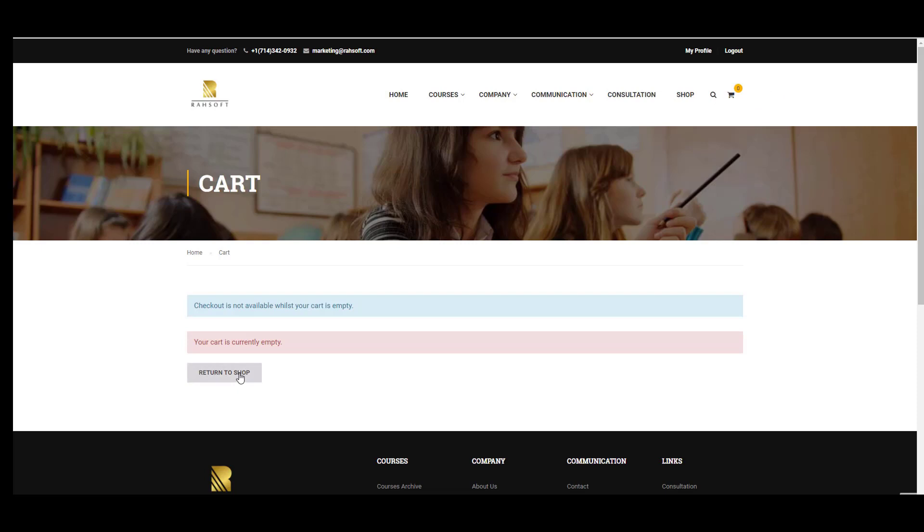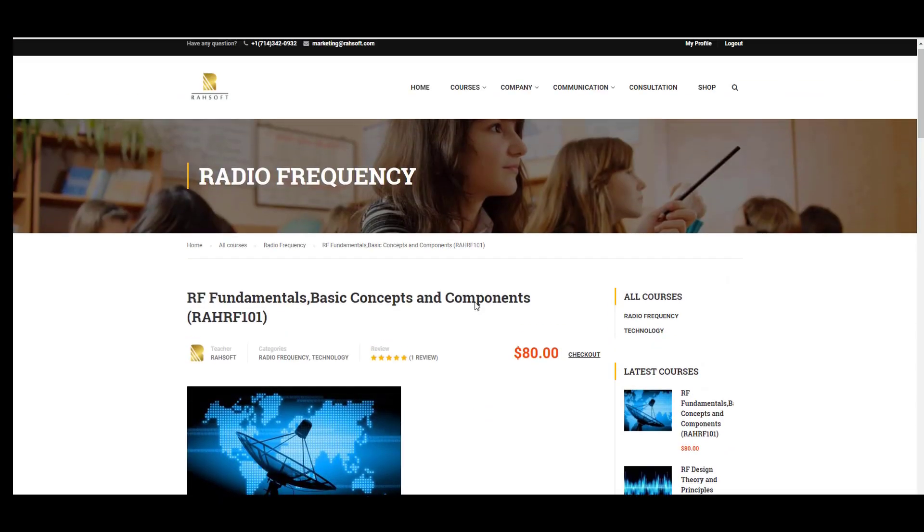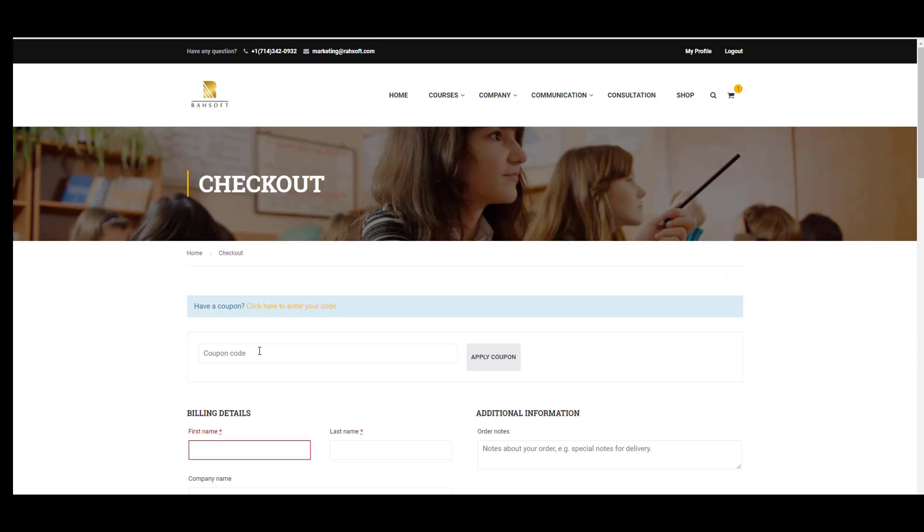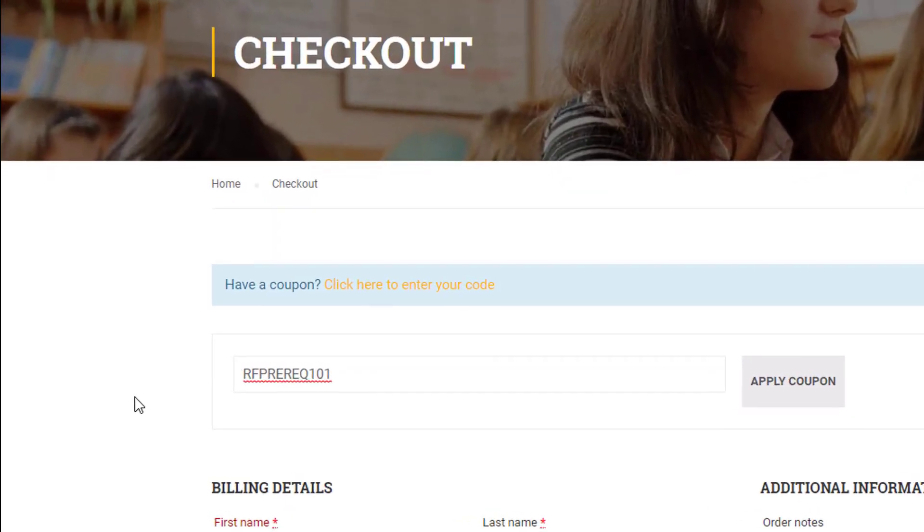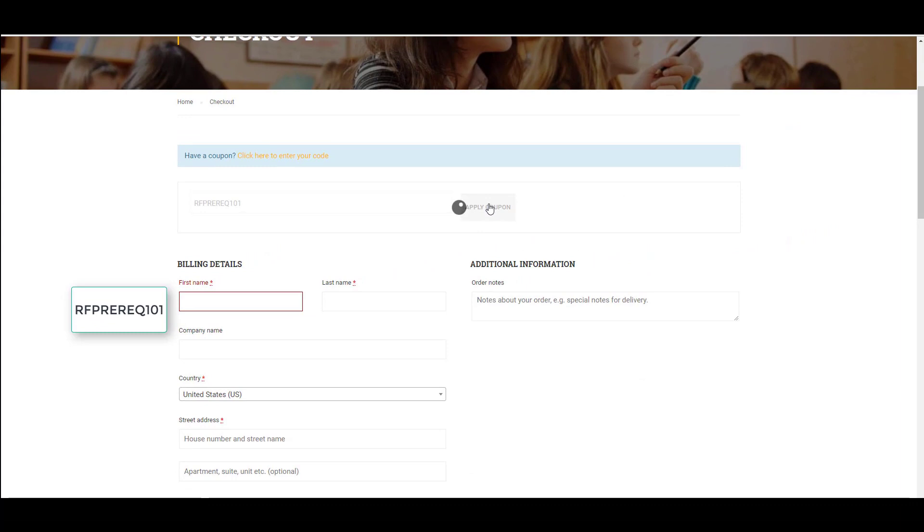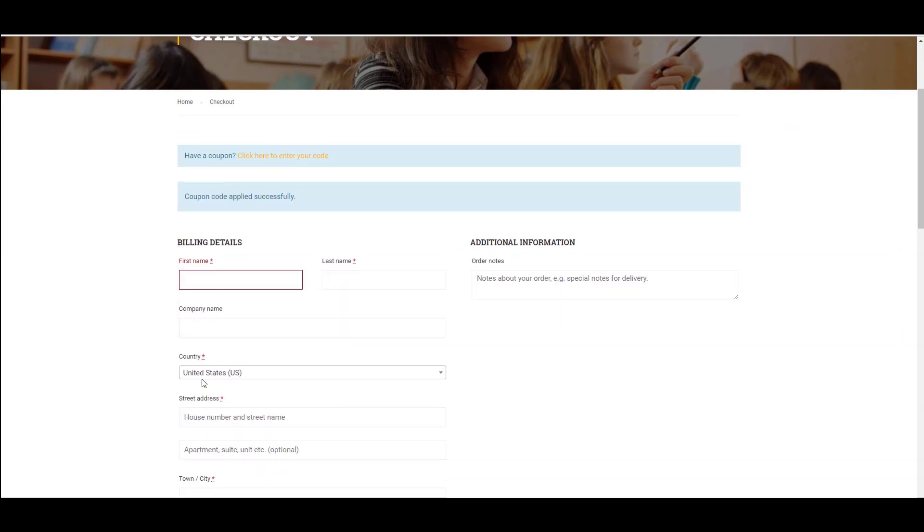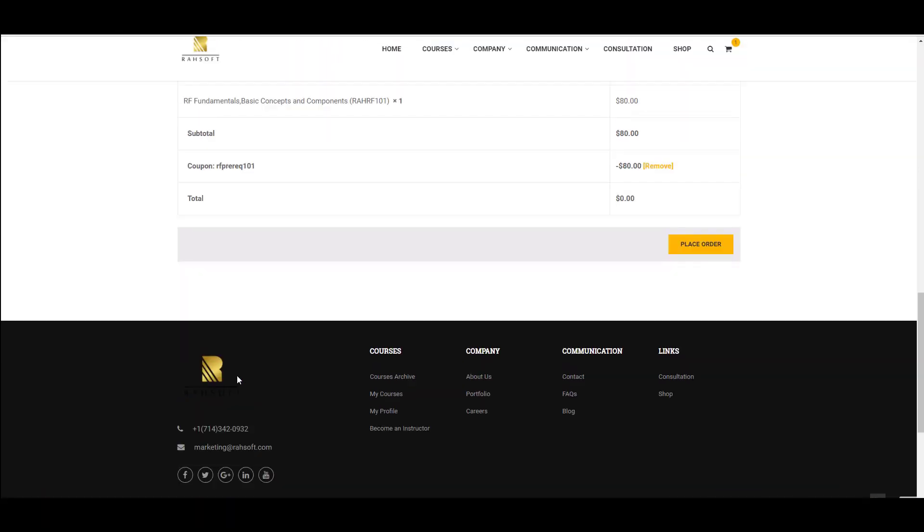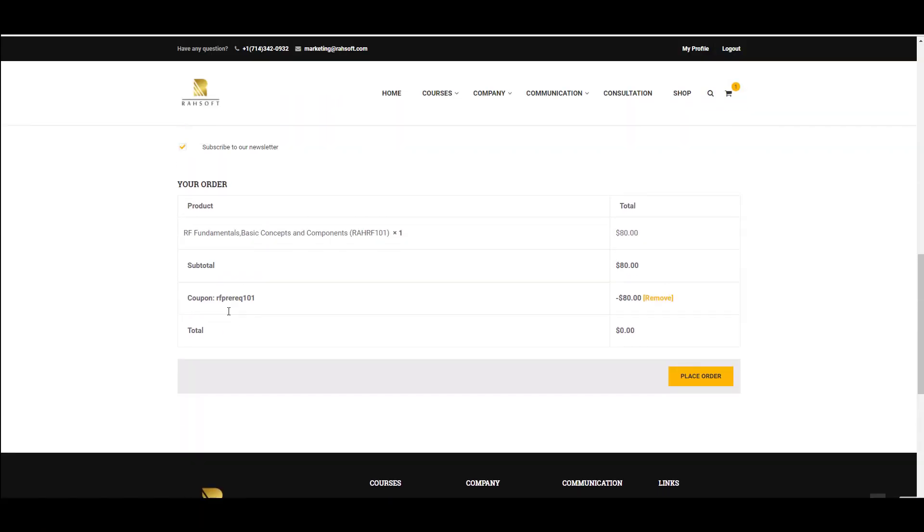And after that, all you need to do is go to the course landing page and go to checkout. Click to enter your code. You can put the coupon code here and then apply the coupon. So then you will have this course for free and you can take this course. You won't pay anything for this course.